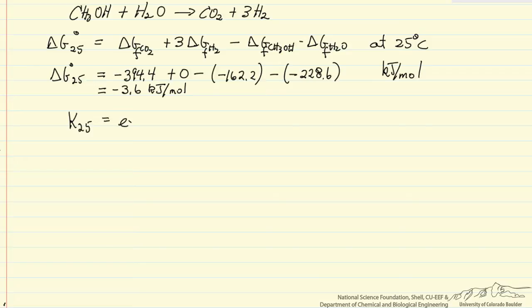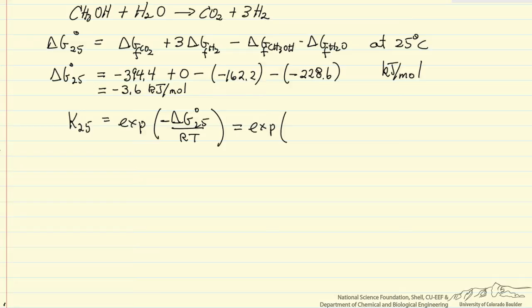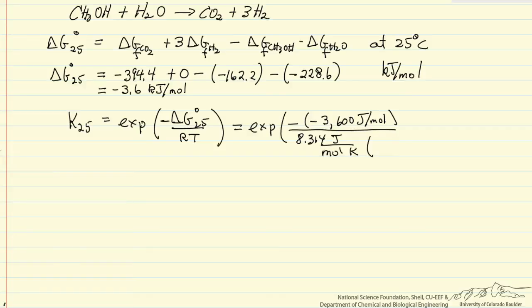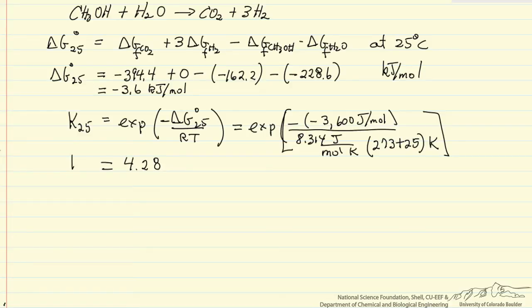Now I'll use this delta G of reaction at 25 degrees C to calculate the equilibrium constant at 25 degrees C. The equilibrium constant is the exponential of the negative of the Gibbs free energy change at standard conditions over RT. Substituting in the numbers carefully — note the minus sign giving minus times minus 3.6 kJ/mol, converted to joules, with R = 8.314 J/mol·K and T = 298 K — I get the equilibrium constant K1 = 4.28 at 25 degrees C.